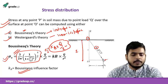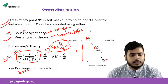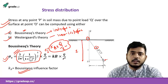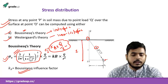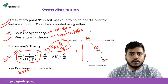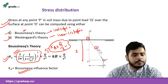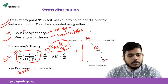Sometimes in questions, the influence factor is directly given along with the depth Z². So you directly use σz = IF × (Q/Z²), where IF is nothing but KB, the Boussinesq influence factor.